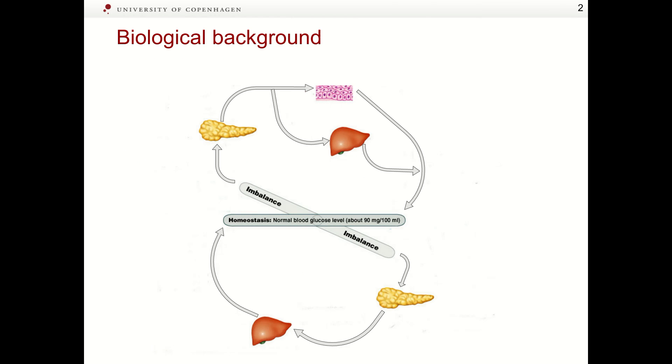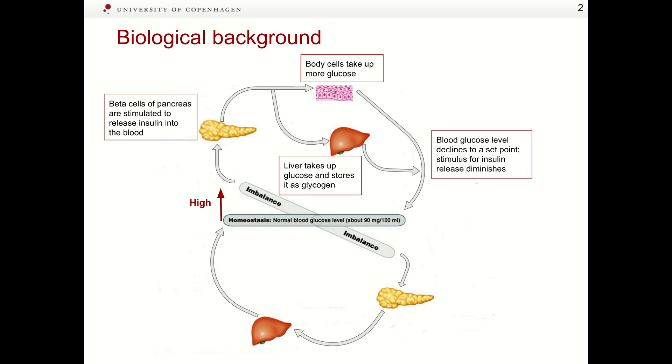Let us recall basic biological aspects of insulin-glucose regulation. Insulin and glucagon act together to maintain homeostasis of blood glucose levels. When blood glucose level rises, beta cells of pancreas are stimulated to release insulin into the blood. Insulin causes the liver to take up glucose and convert it to glycogen. Insulin also causes most cells in the body to take up glucose. As a result, blood glucose level declines to a set point, stimulus to insulin release diminishes, and body returns to homeostasis.